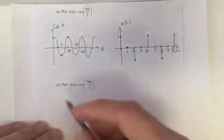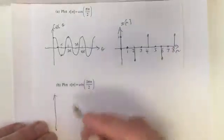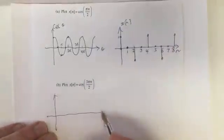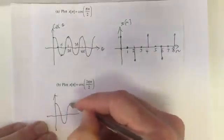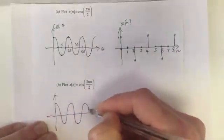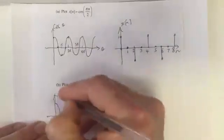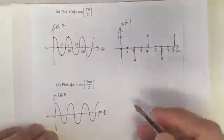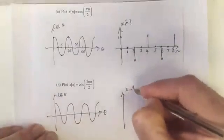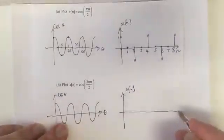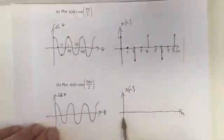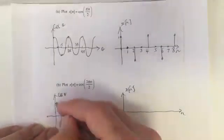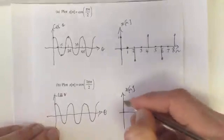So let's do the same thing for plotting cos(3πn/2). I'm just going to plot this out again to help us. This is θ, this is cos(θ). We're going to plot x[n] as n increases. Now let's do n equals 0. Same thing - n equals 0, we get plus 1.